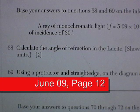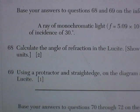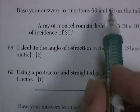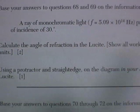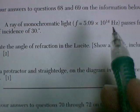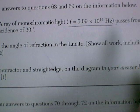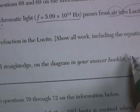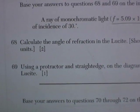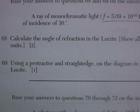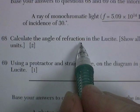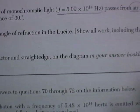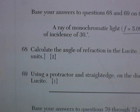Here we are in the June '09 exam. We're on page 12 now. Questions 68 and 69 refer to a ray of monochromatic light at this particular frequency. It goes from air into lucite. It does so at an angle of incidence of 30 degrees. Calculate the angle of refraction. Show all work, including the equation, and substitution with units for two points.